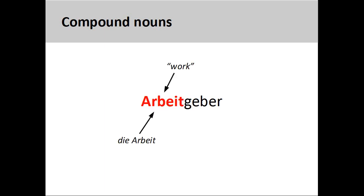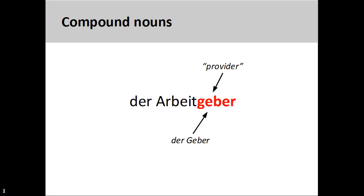The first noun in our compound noun is die Arbeit, a feminine noun meaning work. The second noun is der Geber, a masculine noun meaning giver or provider. This noun is derived from the verb geben, to give.